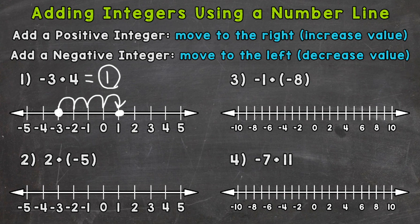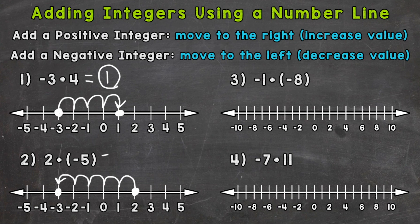On to number two, where we have two plus negative five. We're starting at positive two, and we're adding a negative five, so we are decreasing in value — we need to go to the left. Starting at positive two, we go to the left five spots: one, two, three, four, and five. We end up at negative three. So two plus negative five equals negative three.